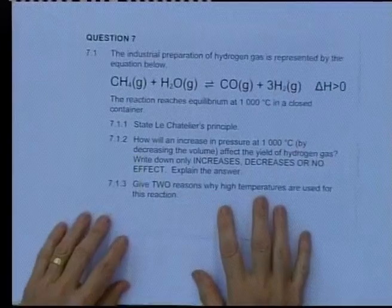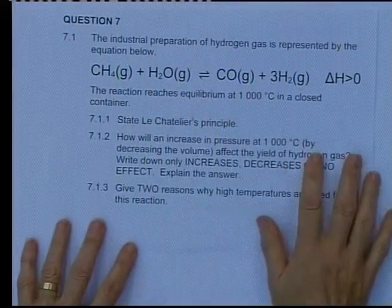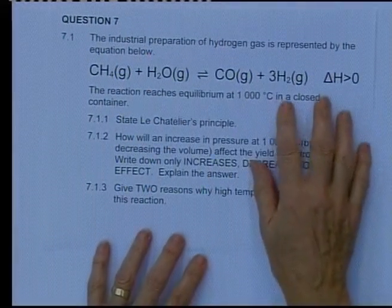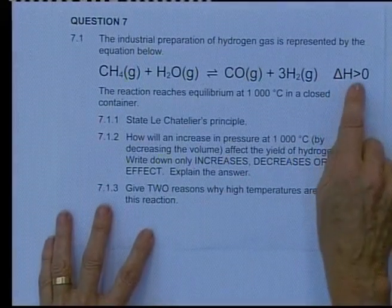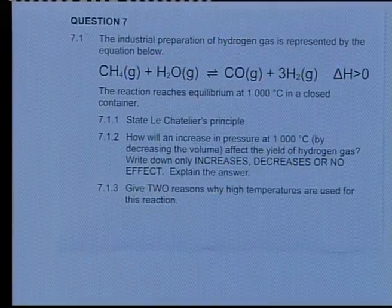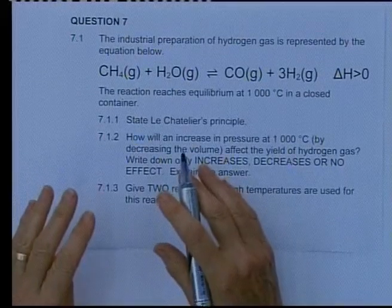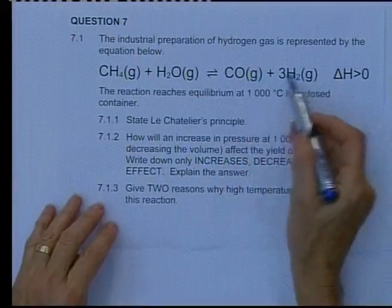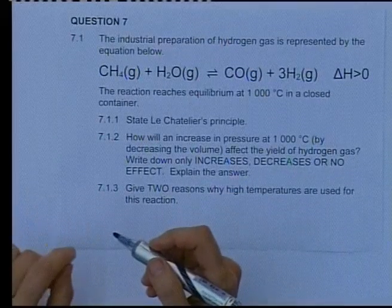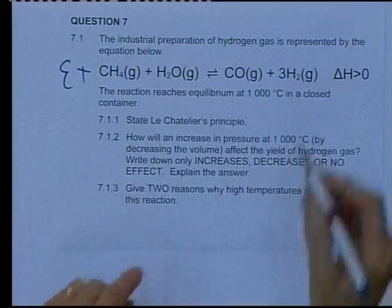Now let's quickly look at question 7.1, Le Chatelier's Principle. They tell you that the industrial preparation of hydrogen gas is represented by the equation below, which is CH₄ + H₂O gives you CO plus 3H₂. What is very important here is that delta H is positive, which means it's an endothermic reaction. Heat is absorbed. I prefer to write the energy that it absorbs or releases. In an exothermic reaction, heat is released together with the product. During an endothermic reaction, heat or energy is used as though it's one of the reactants.